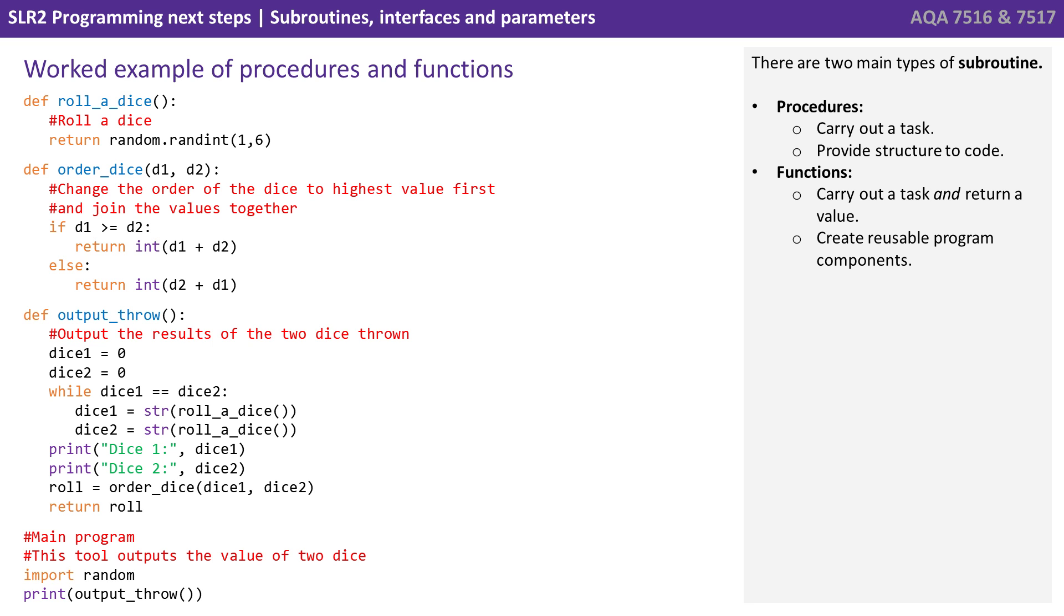So we mentioned there were two main types of subroutine. Procedures which carry out a task and provide structure to a code. And functions which carry out a task and return a value.